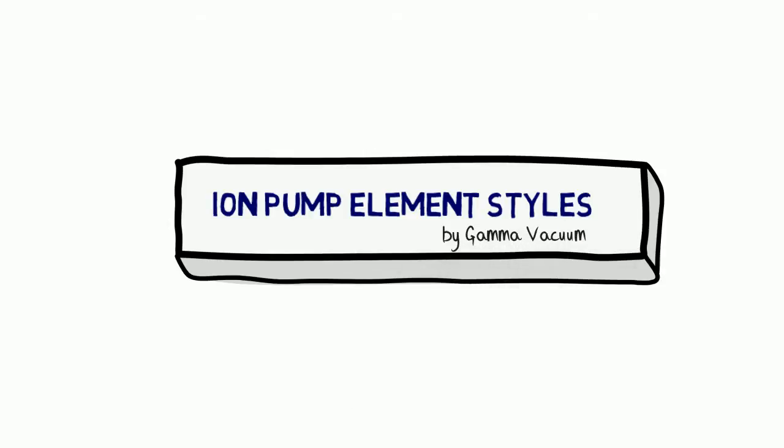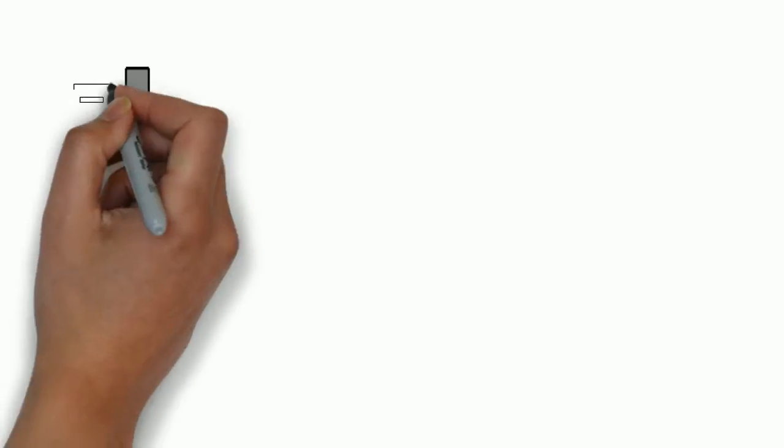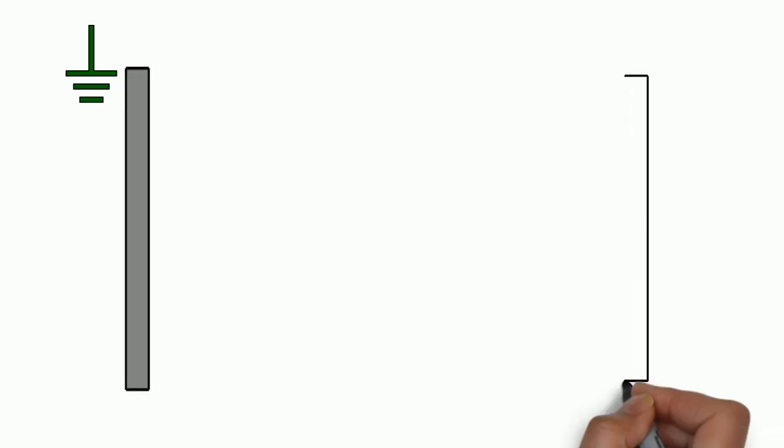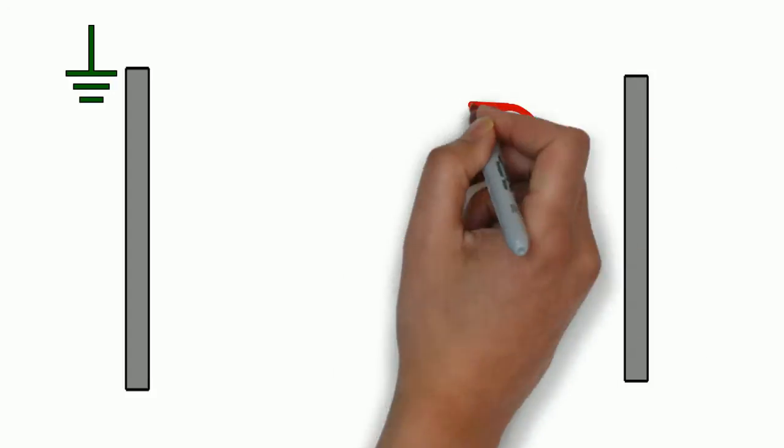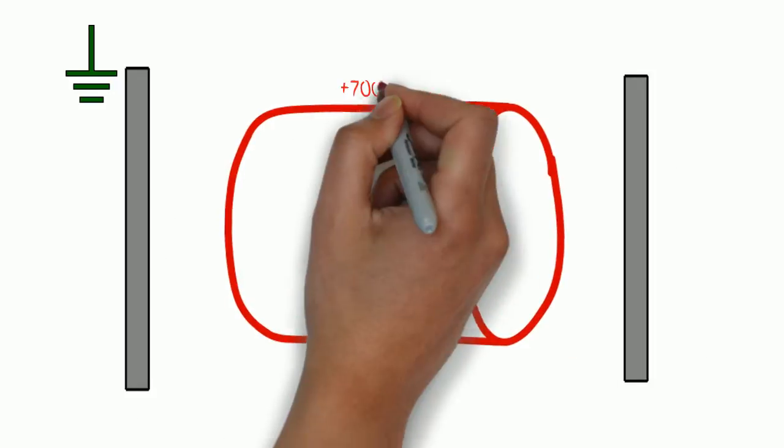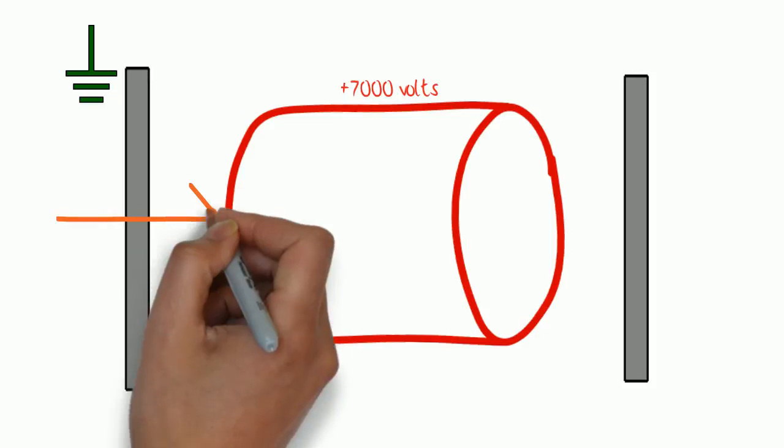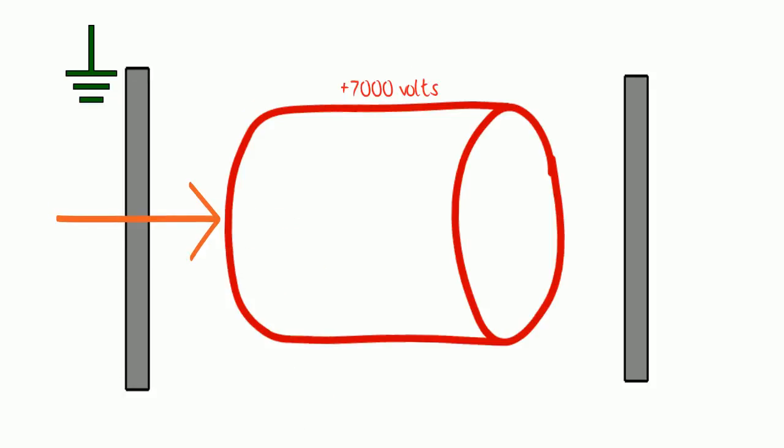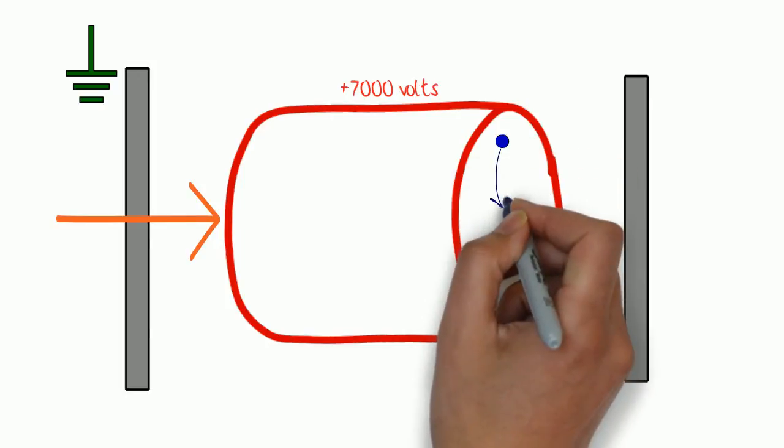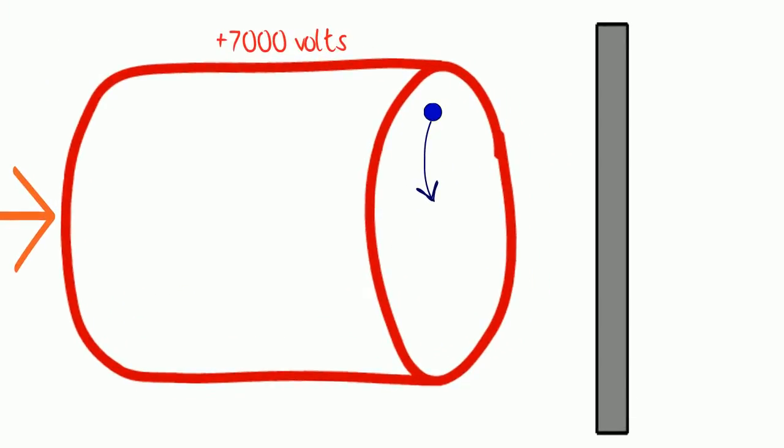We're going to do a little bit of a recap here, remembering that ion pumps are grounded cathode plates, and in between those we're going to have an anode ring, which is usually at about 7,000 volts, a high magnetic field going through that ring, which a bunch of free electrons are going to rotate around the axis of that magnetic field.